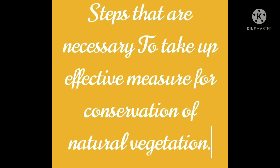Hence, it is necessary to take effective measures for conservation of natural vegetation. Steps include: afforestation — increasing forest cover by planting more plants; protection of forests by law; discouraging agriculture practices like shifting cultivation which destroys forests; preventing forest fires; social forestry to increase forest cover and provide products for community use; encouraging plantation of trees through programs like Van Mahotsav; and setting up forest research institutions — for example, the Forest Research Institute, Dehradun, Uttarakhand in India. Our concern can save the forest and preserve the natural vegetation cover.